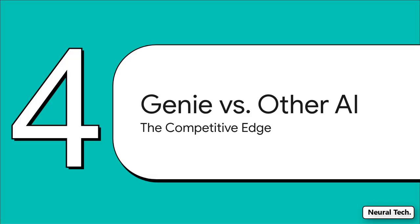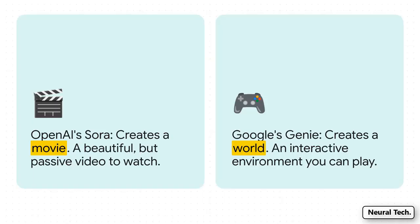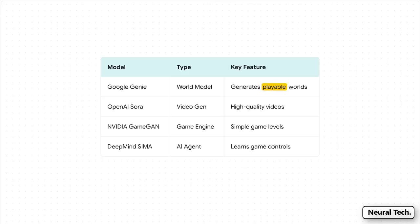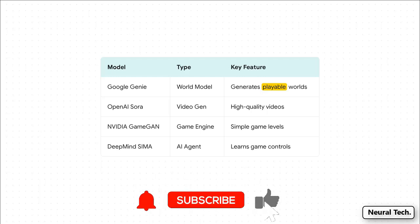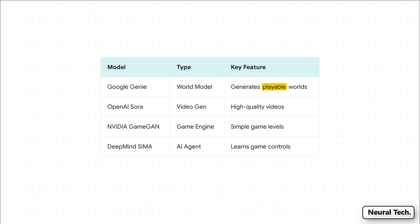To understand why Genie is getting so much attention, it helps to put it in context and compare it to other generative AI making headlines. The most obvious comparison is OpenAI's Sora — those jaw-dropping videos it can make — but here is the fundamental difference: Sora creates a movie, a beautiful thing you watch. Genie creates a world, a thing you play. One is passive consumption; the other is active interaction. Looking at the broader competitive landscape: you've got Sora for video, Nvidia's GameGAN which can generate simple game levels but still needs predefined rules, and DeepMind's Sima, an AI agent that learns to play existing games. Genie is the only one that generates a complete, playable, interactive environment from just a prompt, without needing a prebuilt game engine.